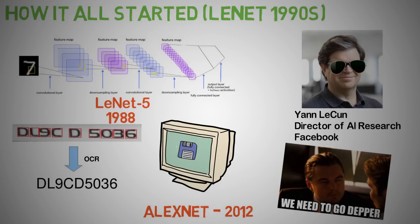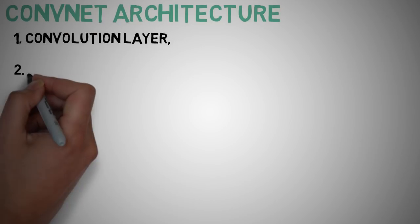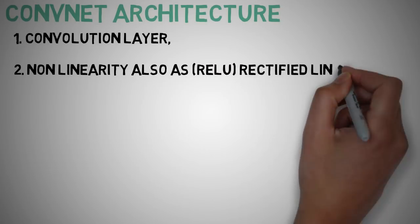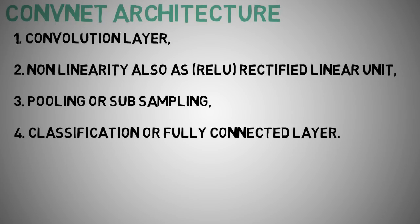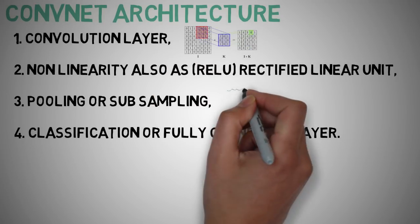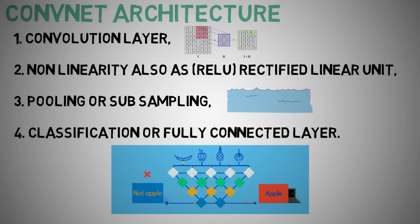We'll discuss the various convent architectures a bit later in this video. The convent architecture: let's take a look at the four main operations in the convent, which are the convolution layer, non-linearity also known as ReLU which is rectified linear unit, pooling or subsampling, and classification or fully connected layer. These operations are the basic blocks of every CNN, so understanding how these work is a very important step in developing a comprehensive understanding of convnets. We'll first try to understand the intuition behind each of these operations as we progress through the lecture.